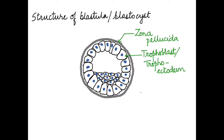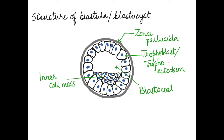Inside this there is a cavity present. This cavity is called the blastocyst. Inside the row of cells that is the trophoblast, there is a mass of cells present to one side, and that is called the inner cell mass, which develops to form the embryo.